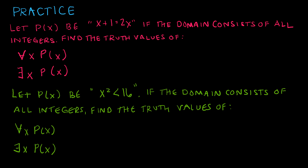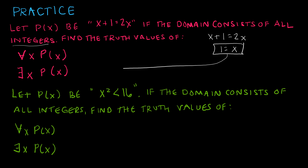For the first one, let p of x be x plus 1 equals 2x. Subtracting x from each side gives x equals 1. Dealing with the integers, there does exist an x such that p of x is true because x equals 1. So the existential is true. Is it true for all integers? No — I can't plug in any old integer and have it equal 1; only x equals 1 works. So the universal is false.